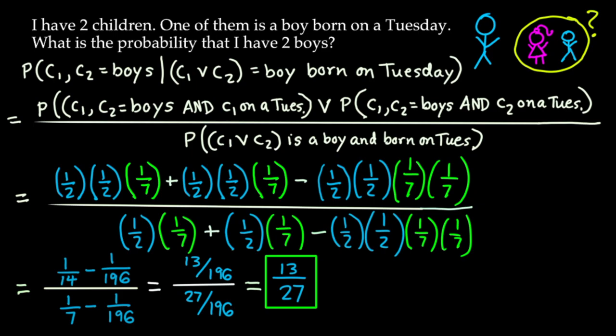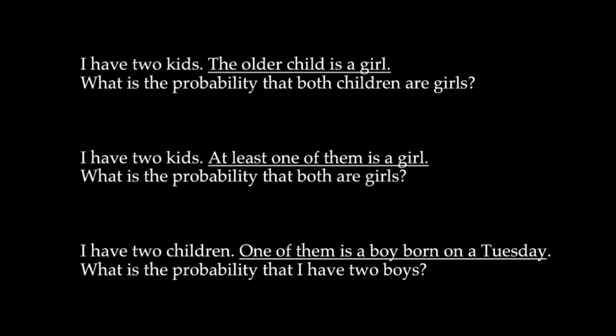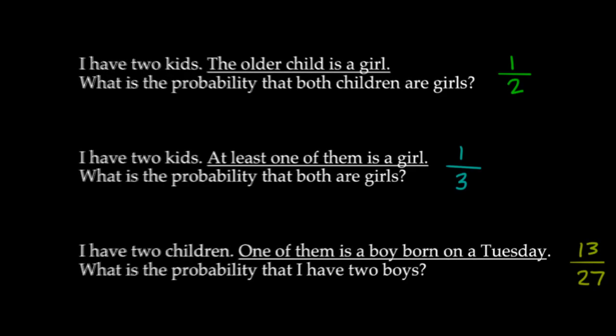The reason the answers differ is that as more specific information about one child is given, it becomes more likely that we're talking about only that one child rather than both. Problem one gives 1/2 because the two kids are entirely distinct — one is older, one is younger, so there's no joint probability. In problem two, saying 'at least one is a girl' introduces ambiguity, making it more likely we're talking about both, giving 1/3. In problem three, the extra detail about Tuesday makes it less ambiguous than problem two, pushing the answer closer to 1/2, giving 13/27.